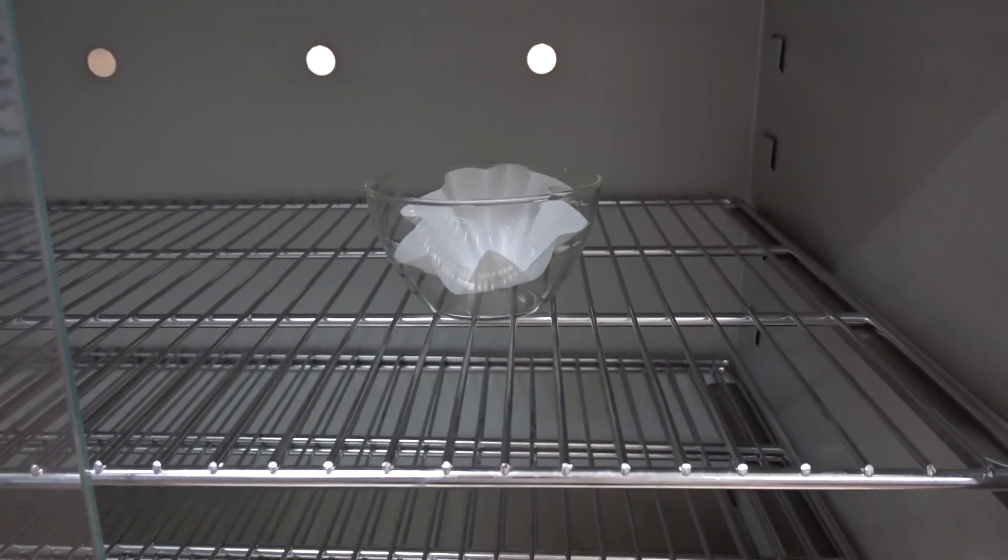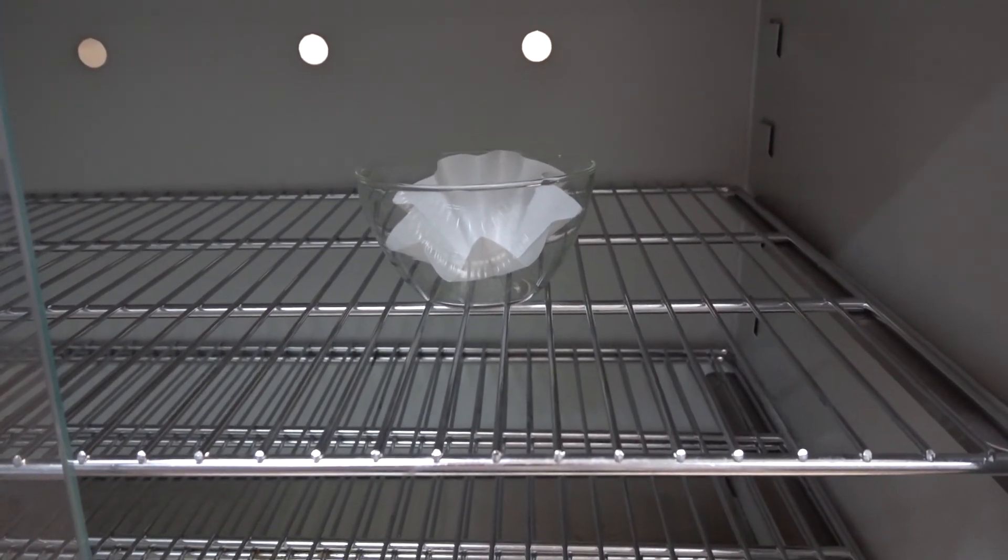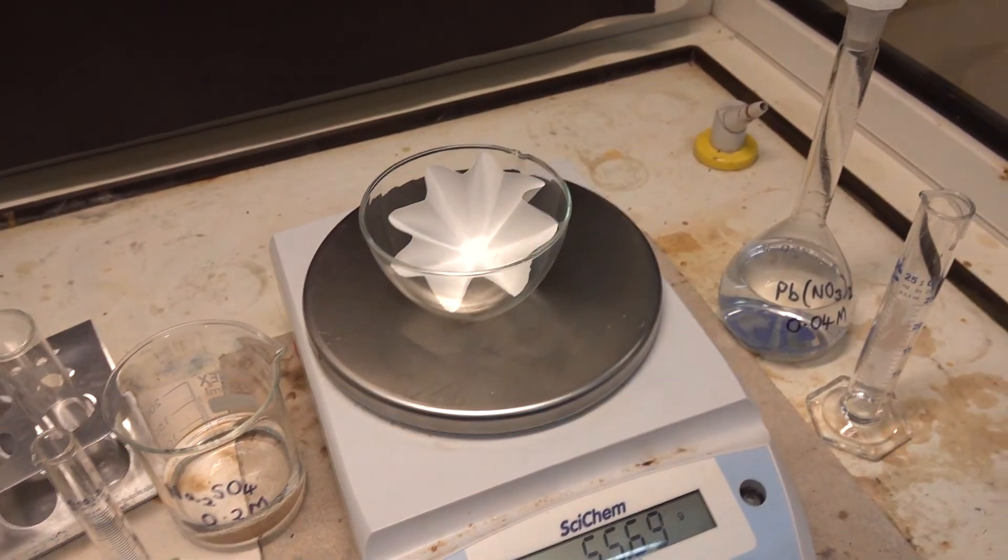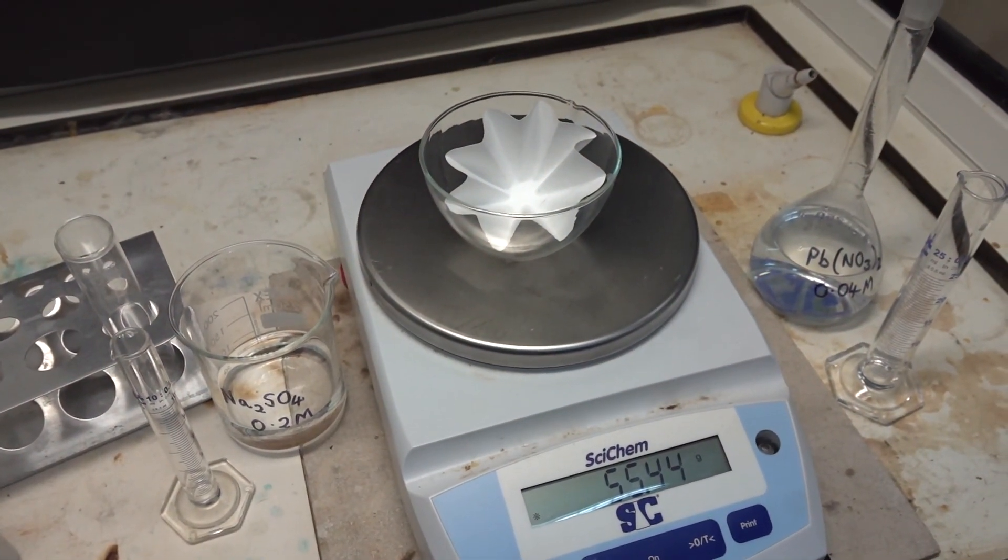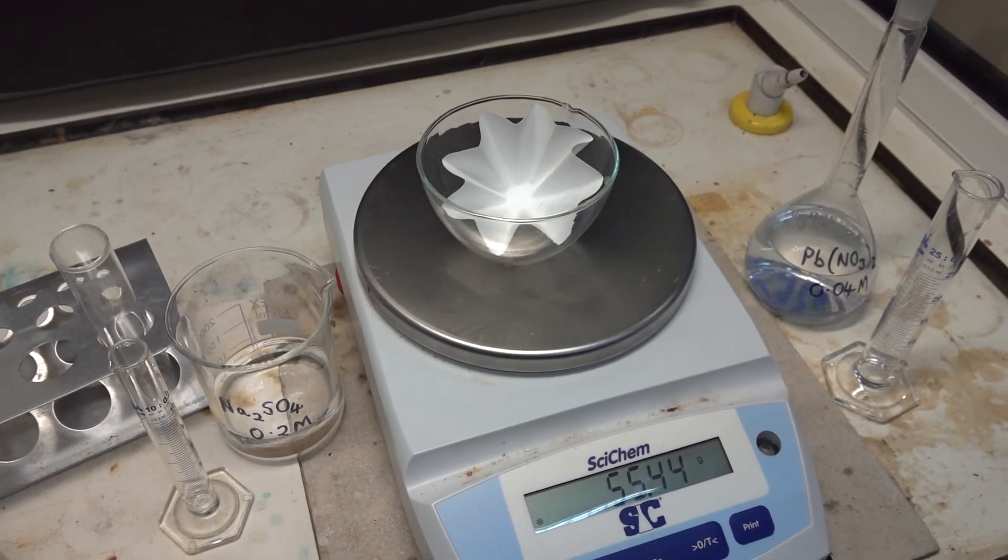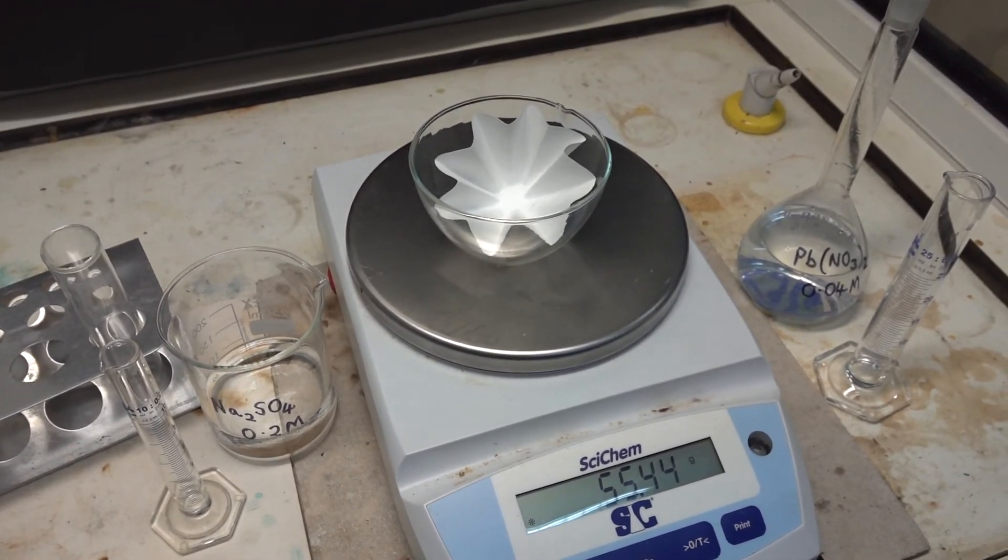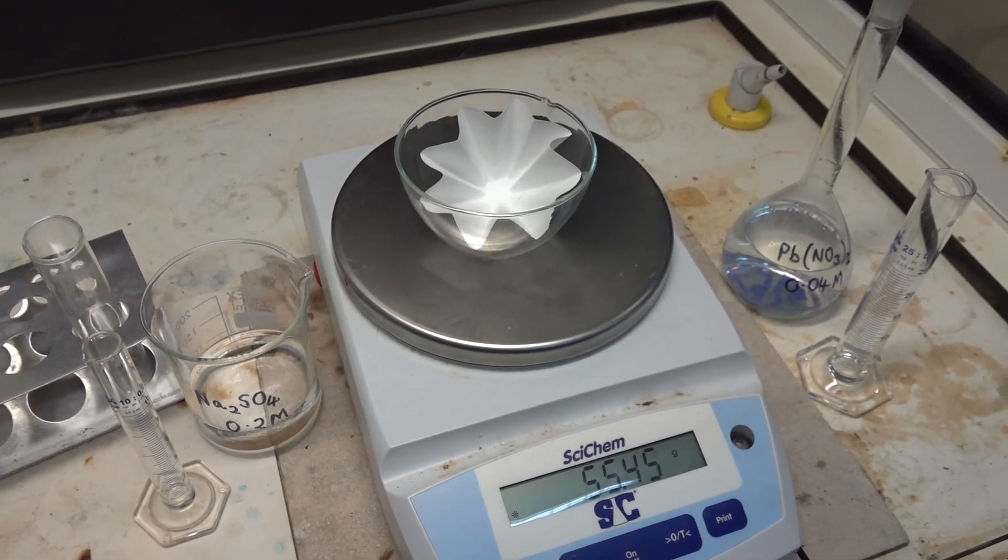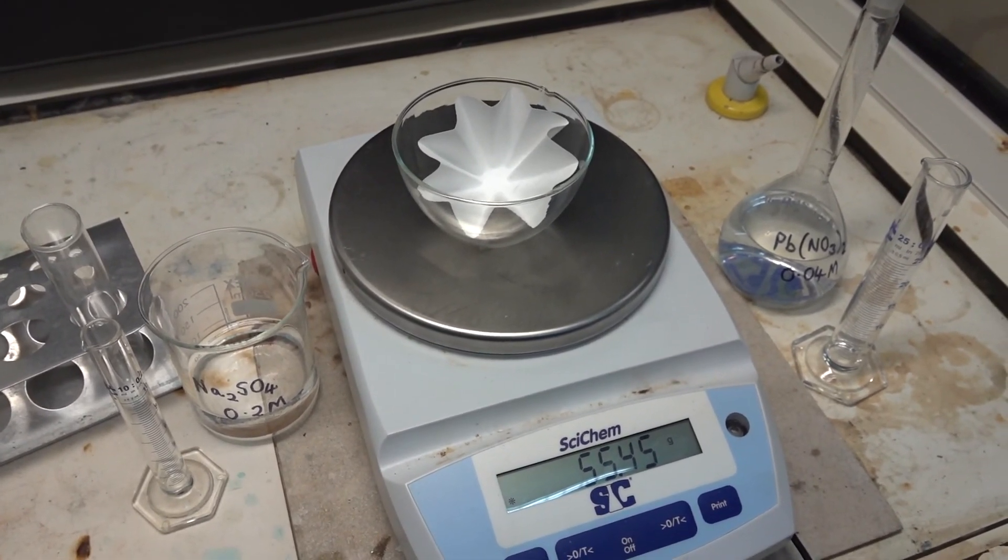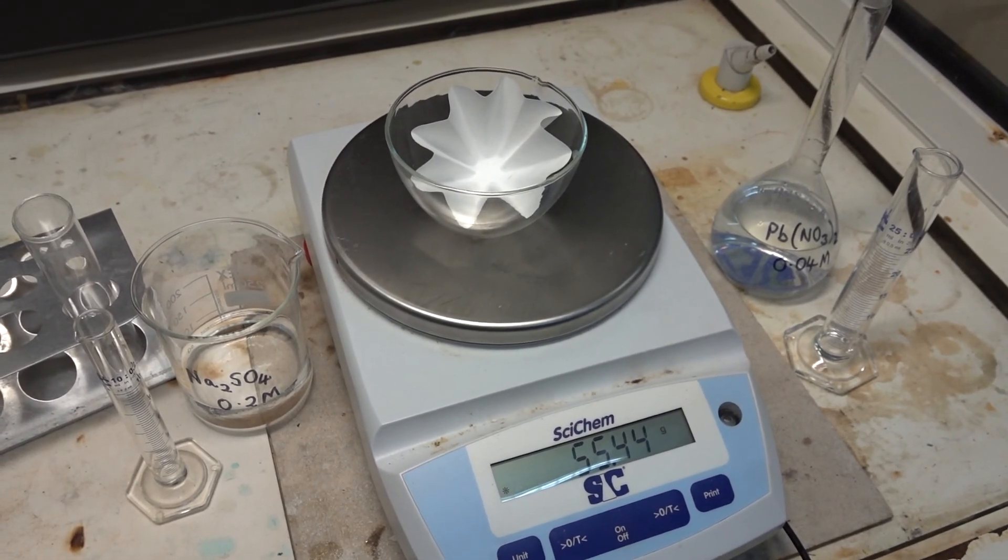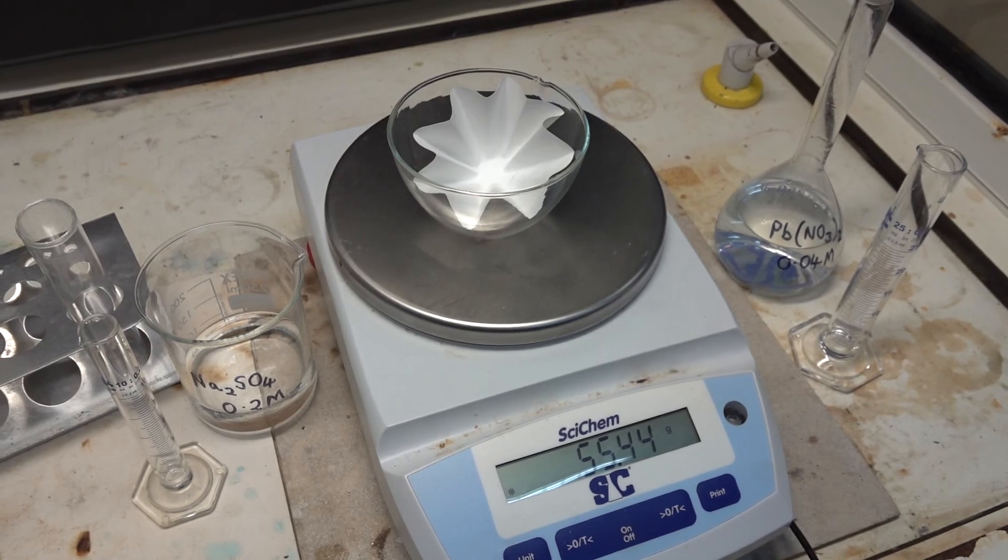Now that the precipitate has dried, we need to find the mass of the product, and we do that simply by transferring to the balance and weighing the total mass: 55.44 grams. From our readings we can calculate the mass of the lead two sulfate produced and also calculate the percentage yield.